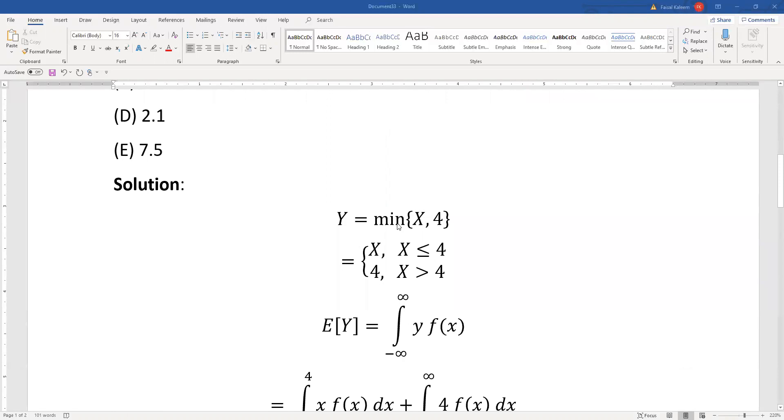That's why y will be the minimum of x and 4, which means y will equal x when x is less than or equal to 4, and y will equal 4 when x is bigger than 4.